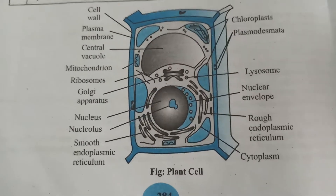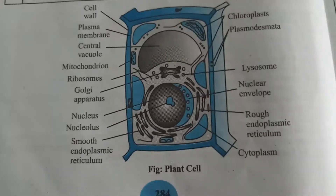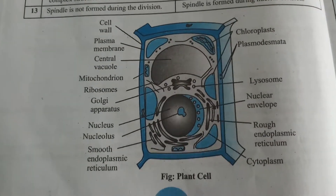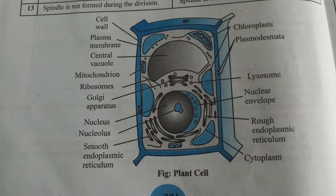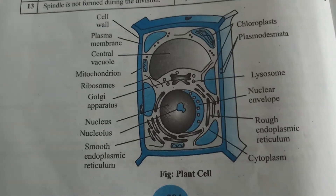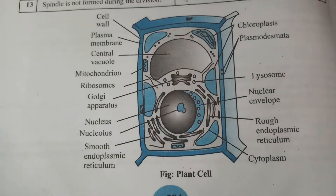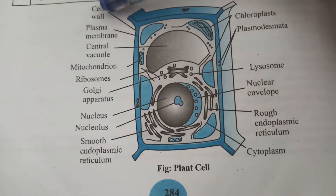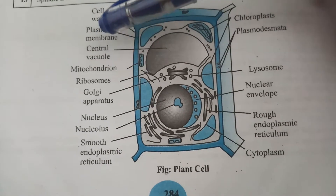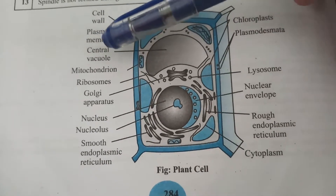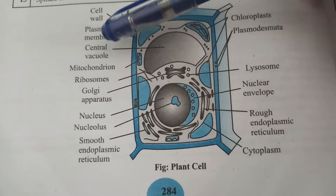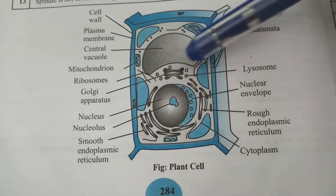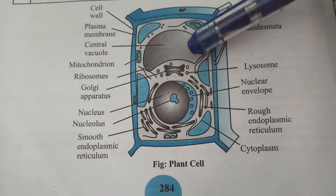We are going to see the boundaries and the special cell contents related to the plant cell. The very outer layer of the plant cell is the cell wall, and next to the cell wall we have the plasma membrane, and next to that we have the very important cell organelle